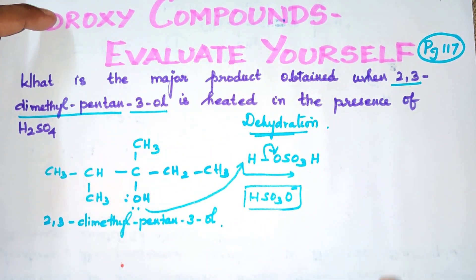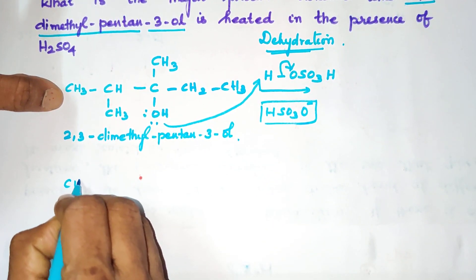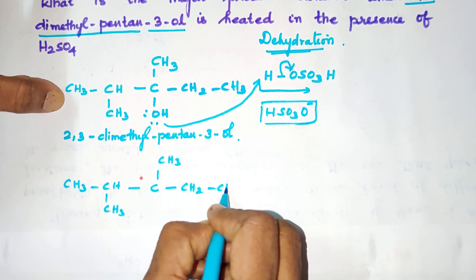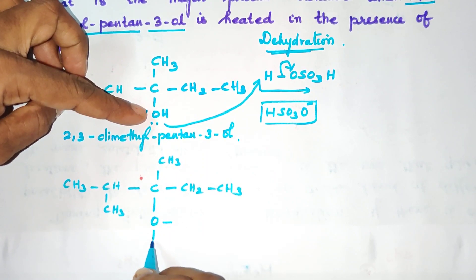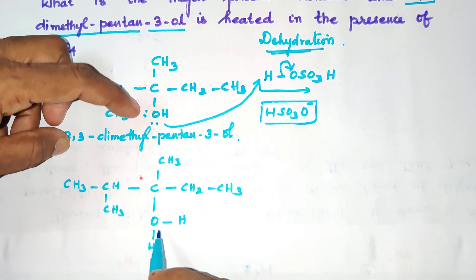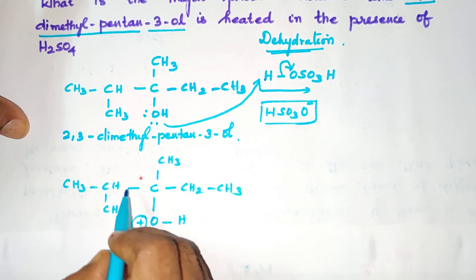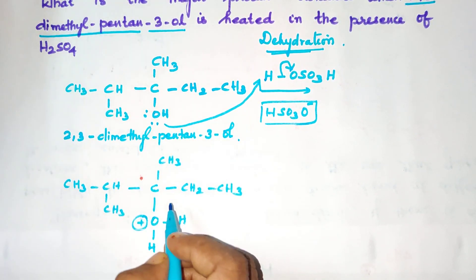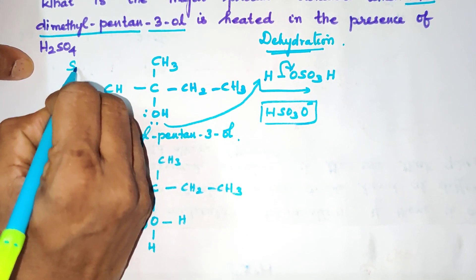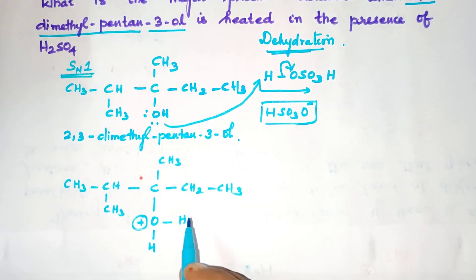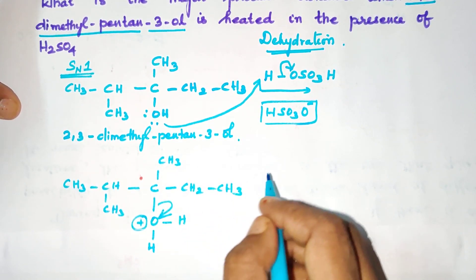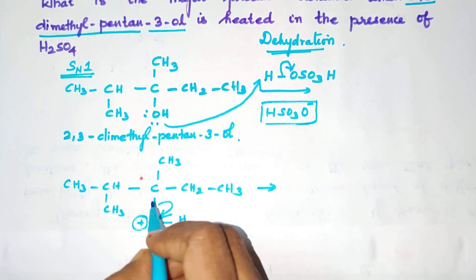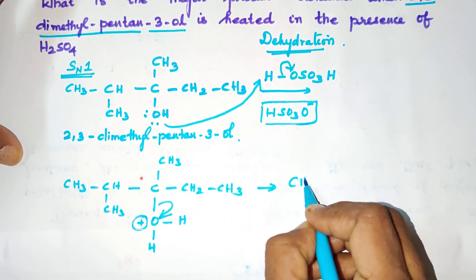After protonation, the product is: CH₃-CH(CH₃)-C⁺(CH₃)-CH₂-CH₃ with -OH₂ leaving. The C-O bond of the oxonium ion dissociates. Water leaves as the leaving group (H₂O), and a carbocation is formed. The carbocation formed is: CH₃-CH(CH₃)-C⁺(CH₃)-CH₂-CH₃.